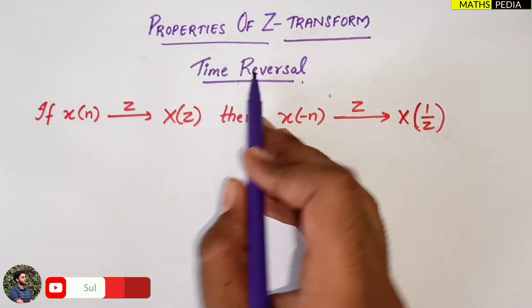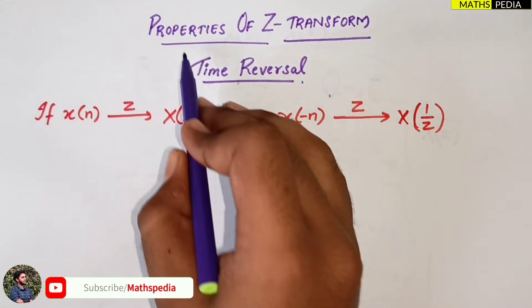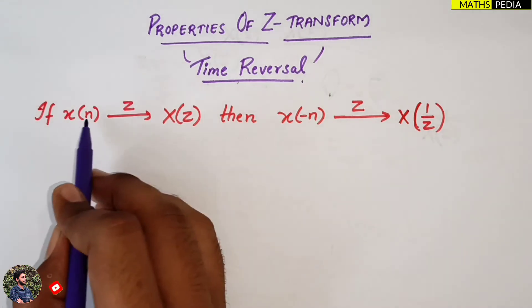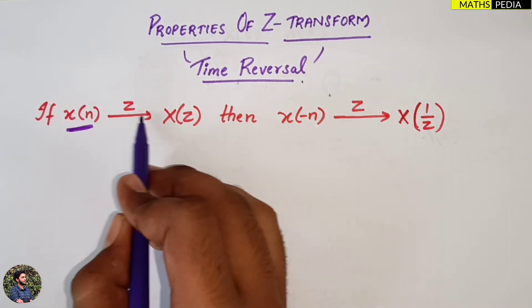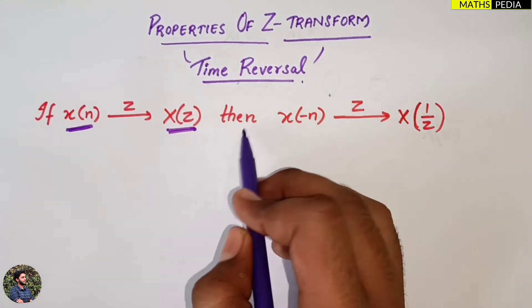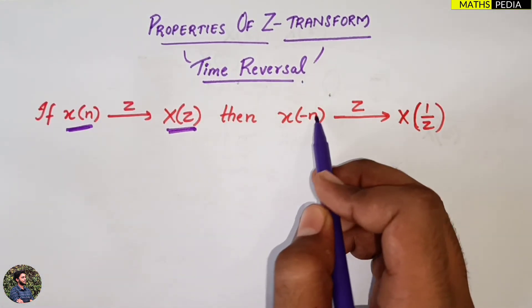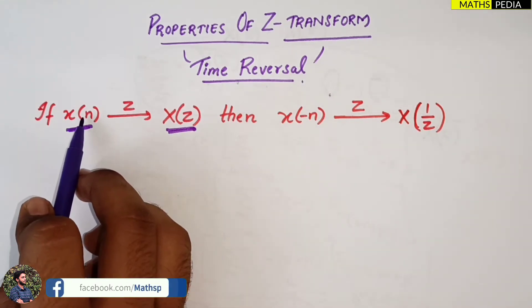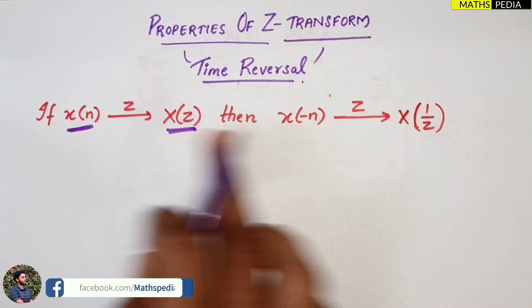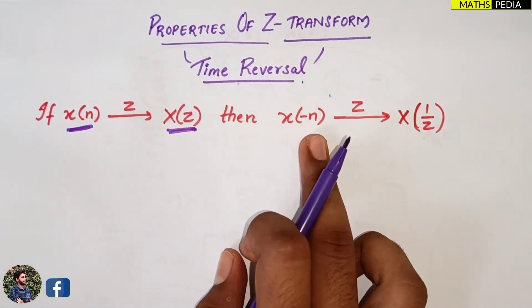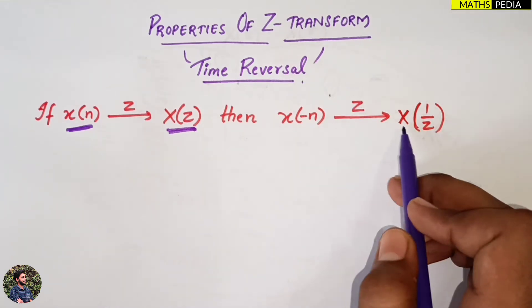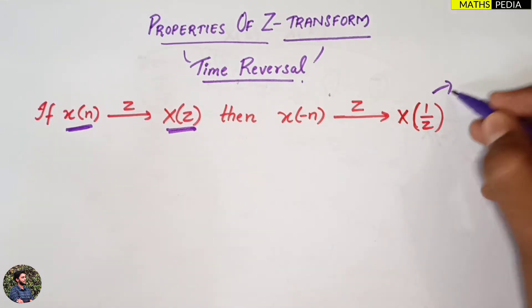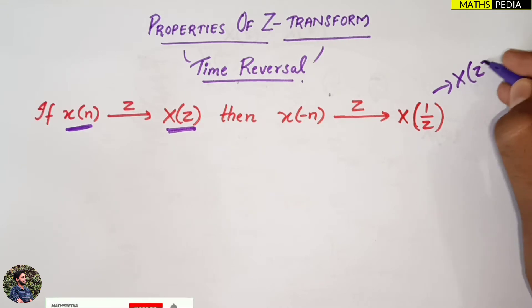In this video we will see the time reversal property of the Z-transform. The definition says: if x(n) is a signal whose Z-transform is X(z), then the time reversal x(-n) has Z-transform X(1/z), or equivalently X(z⁻¹). The only difference from x(n) is the reversal of the time variable.